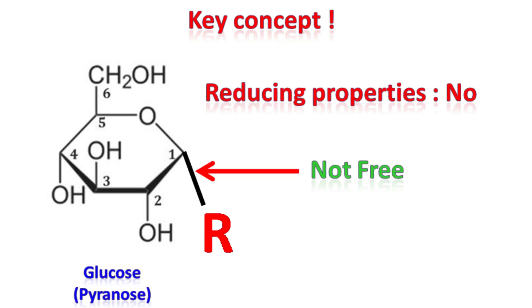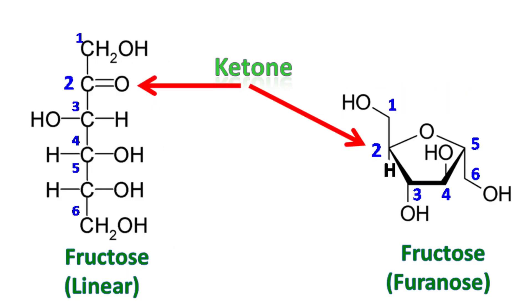In a similar way, imagine a structure of fructose. It's the second carbon which has the ketone group, so the second carbon must be free in order to have the reducing properties. So let's talk about different disaccharides — maltose.